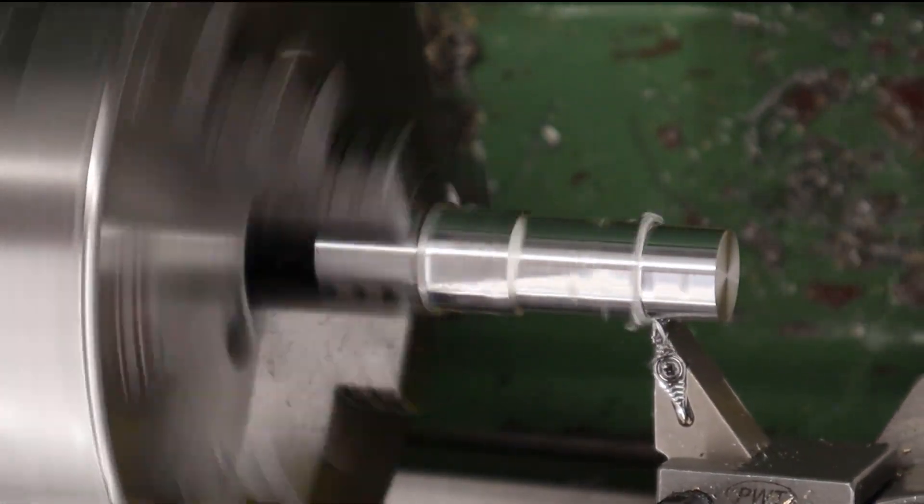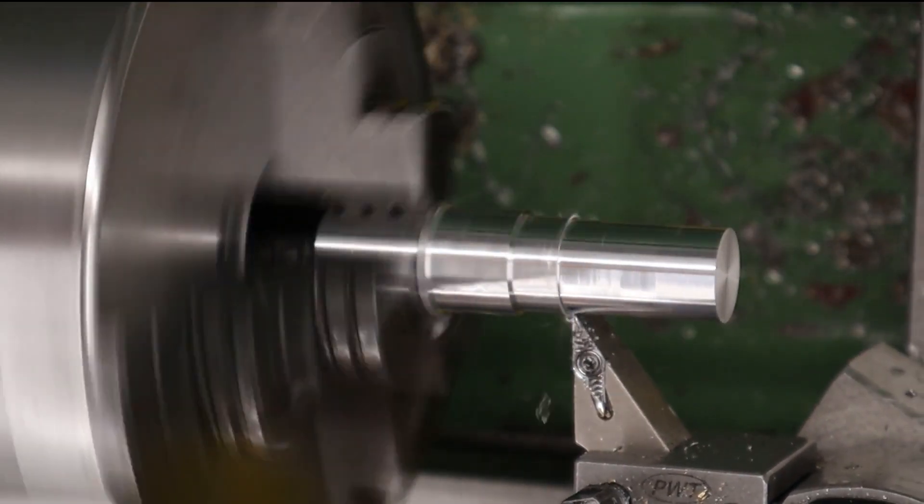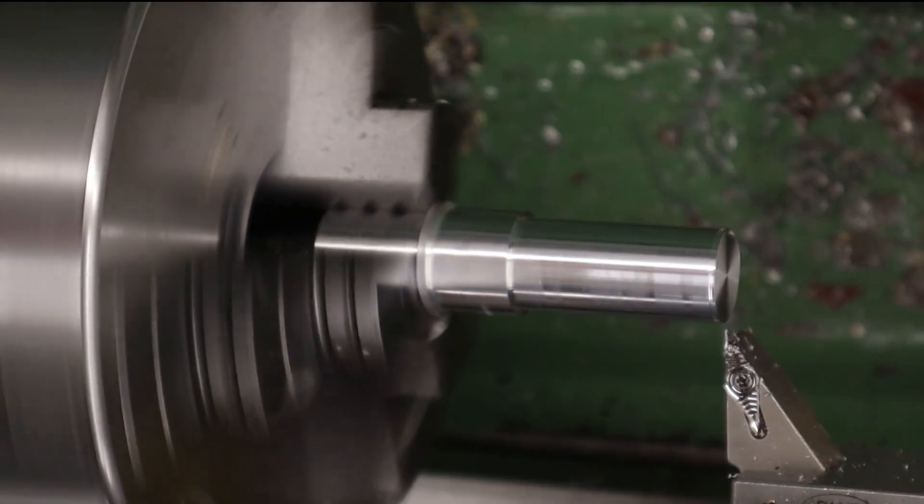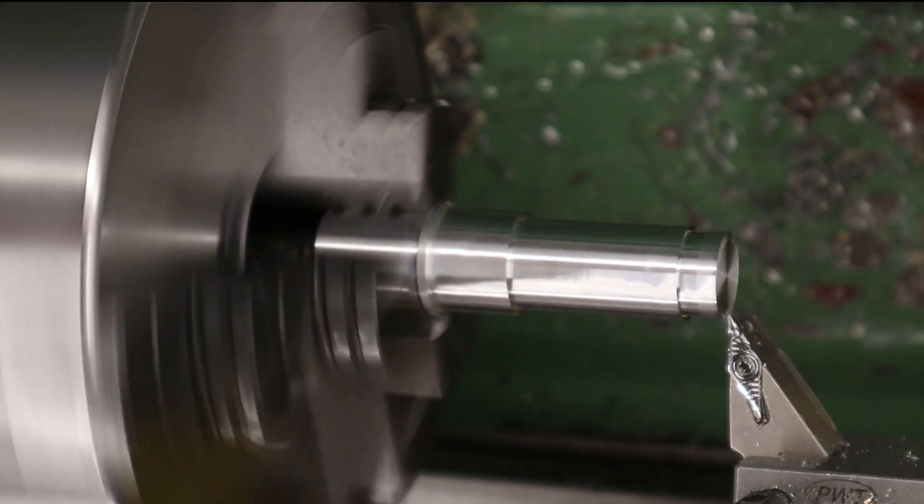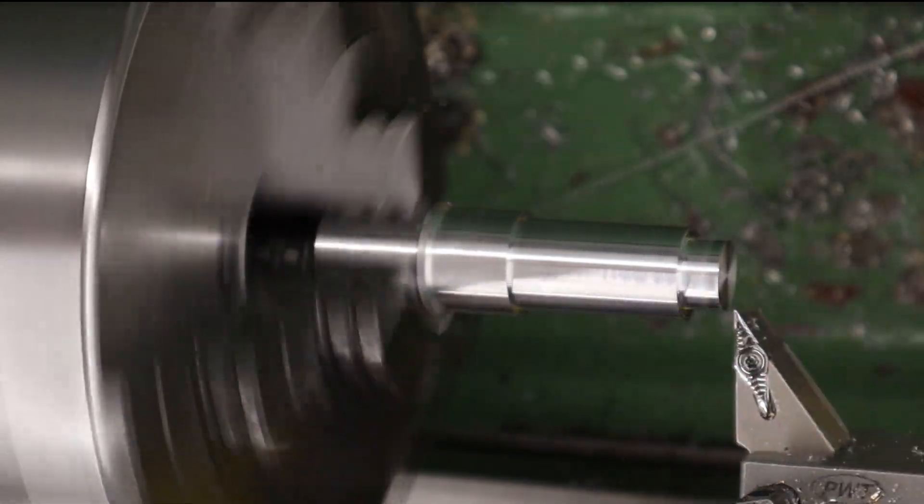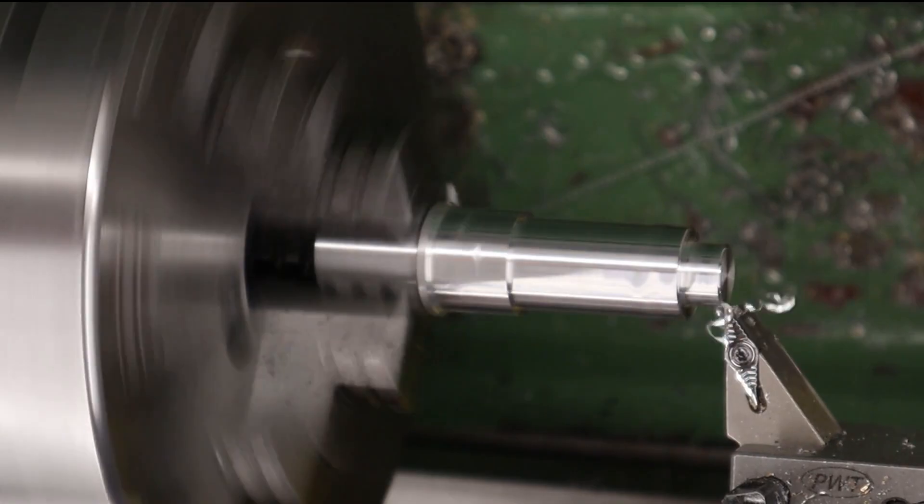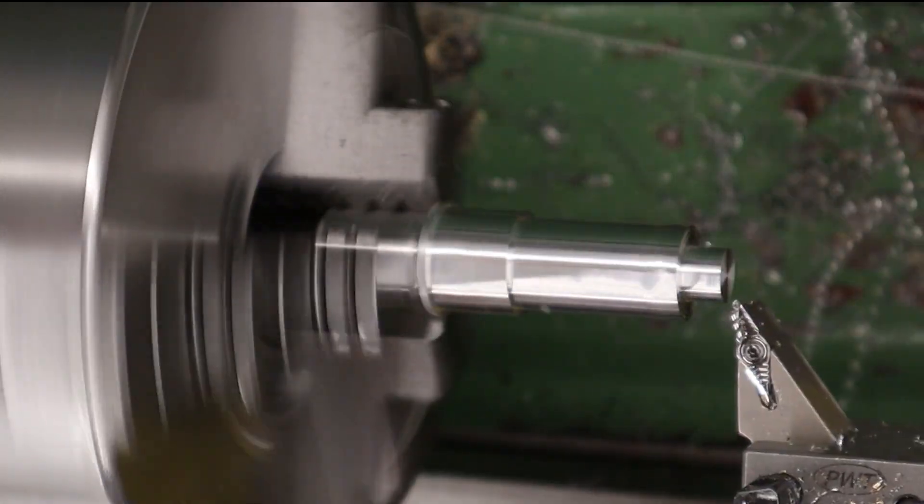So at the moment the transfer port in the rifle is around 6.7 millimeters and that's too big for a .177 sub 12 rifle. A general rule of thumb is that the transfer port size should be roughly the same as the bore size. So we're going to be remaking the valve with that in mind.